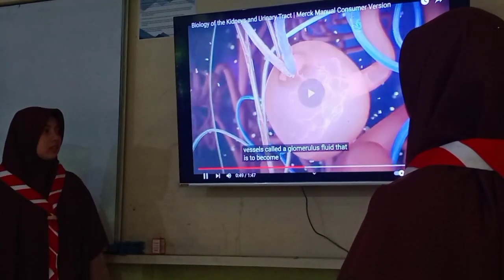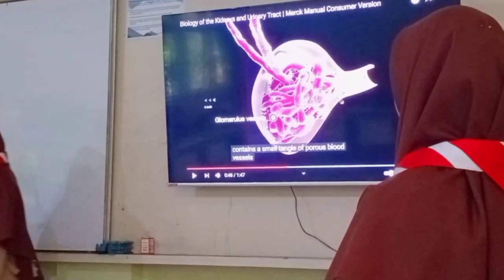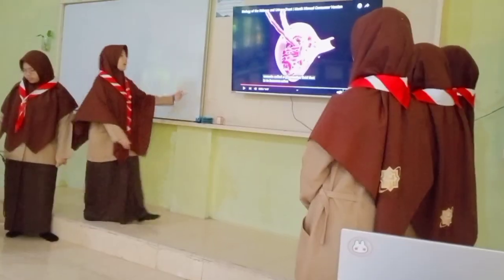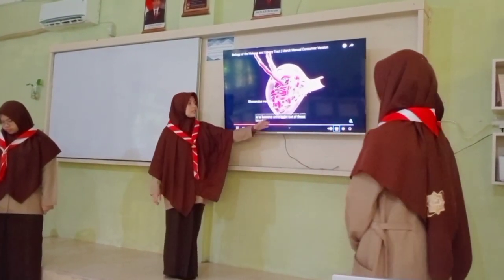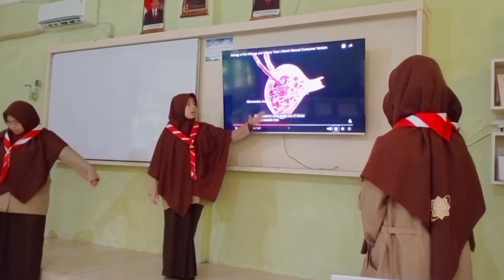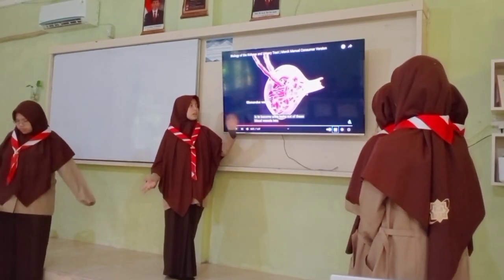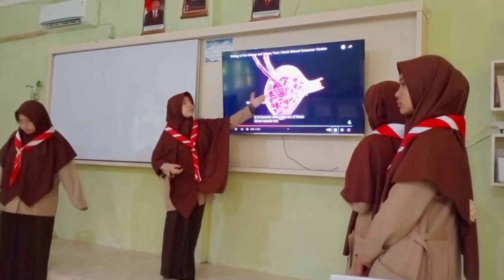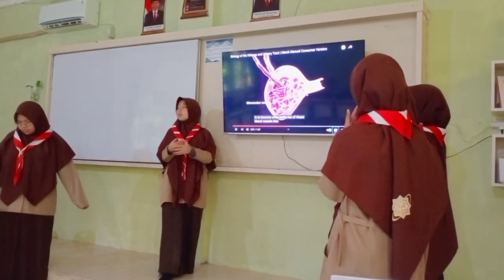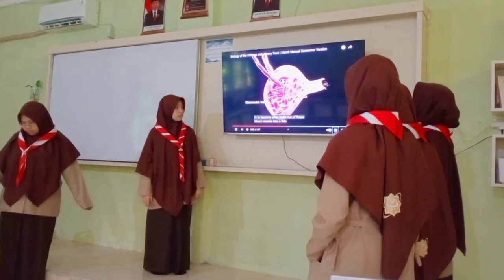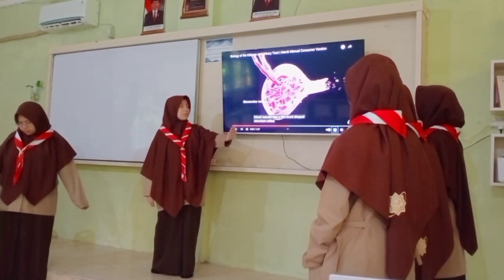To become urine, there are blood vessels involved. The fluid — or cairan — that will become urine leaks out of this blood vessel and is released from the glomerulus into a thin bowl-shaped structure.